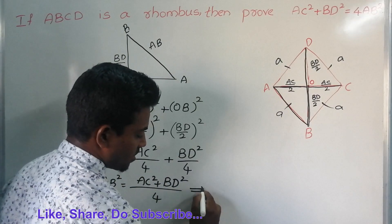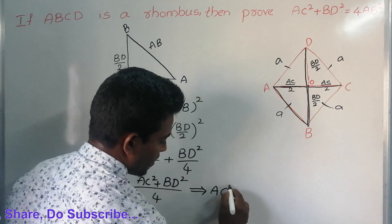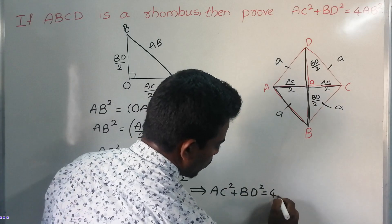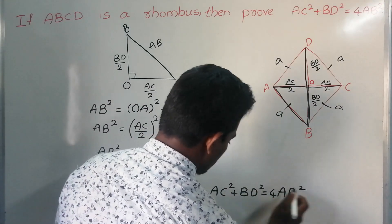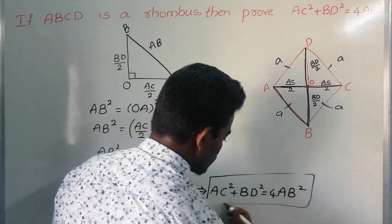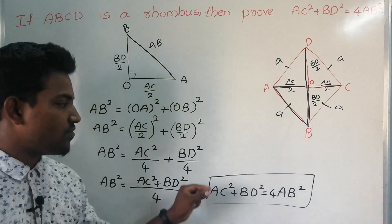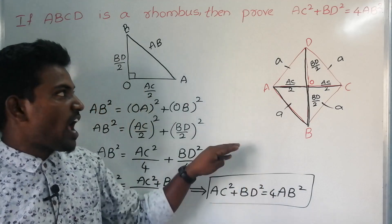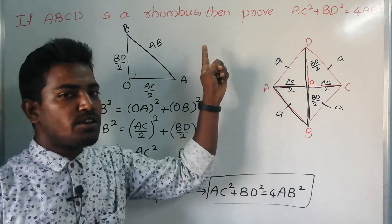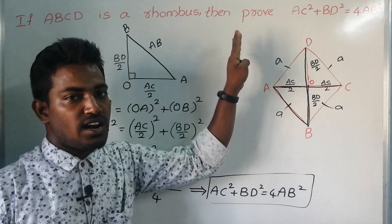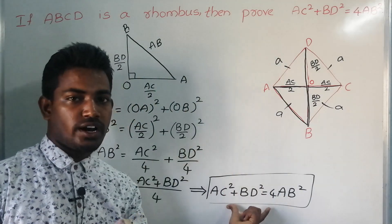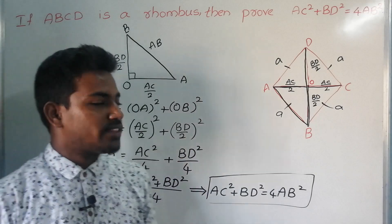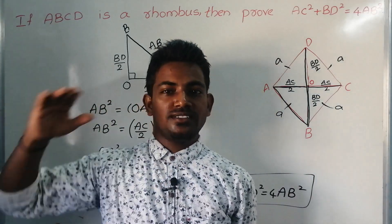Rearranging this equation, we get AC² + BD² = 4AB². This is the proof, which is very important for people preparing for SSC as well as school students — it might come in the eighth or seventh class. This is all about pure maths. Thank you for watching this video. Jai Hind.